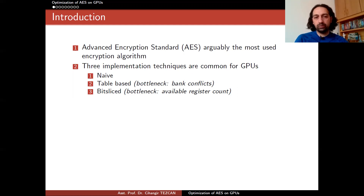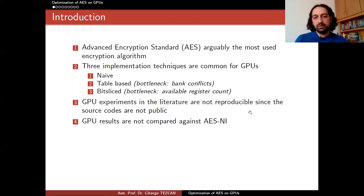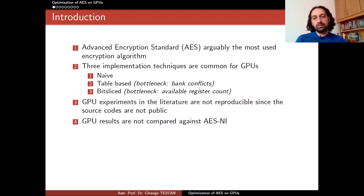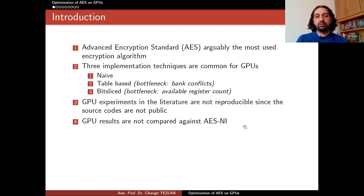There are good table-based and bit-slice optimization results in the literature, but GPU experiments are not reproducible since the source codes are not public, which is not good for science. More importantly, these GPU results compare their optimizations with previous GPU results or CPU results performed at a software level. But since 2010, Intel and AMD CPUs have hardware-level instructions called the AES New Instruction Set, AES-NI, that allows AES encryption at the hardware level. For fair comparison between GPUs and CPUs, AES-NI implementations should be compared.